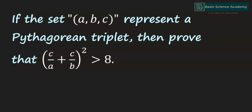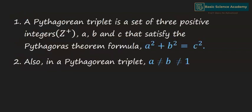In this video we are going to solve the problem: if the set ABC represents a Pythagorean triplet, then prove that (C/A + C/B)² is greater than 8. First, let's discuss some properties of Pythagorean triplets required to solve this problem. The first property is that a Pythagorean triplet is a set of three positive integers A, B, C that satisfy the Pythagoras theorem: A² + B² = C².